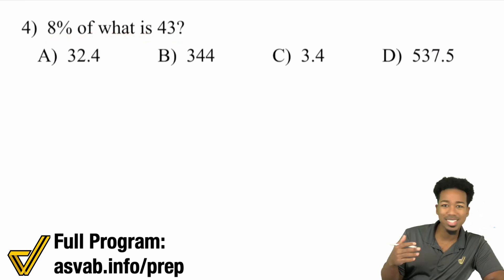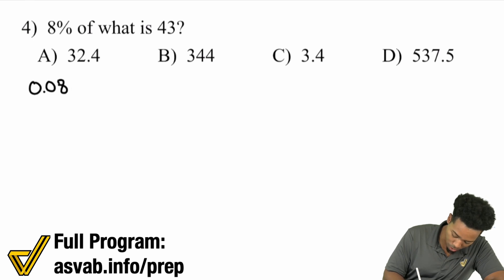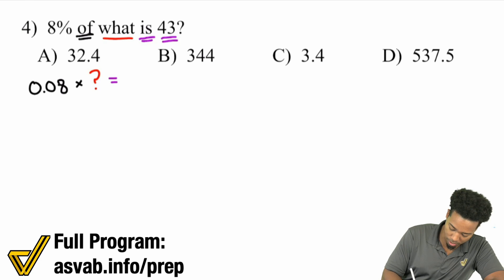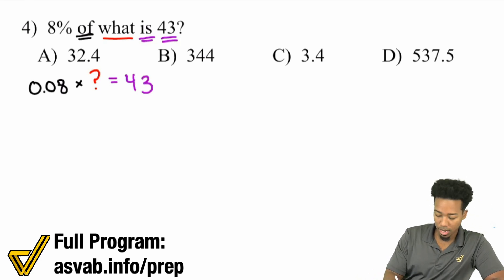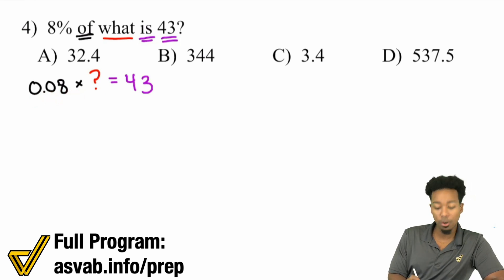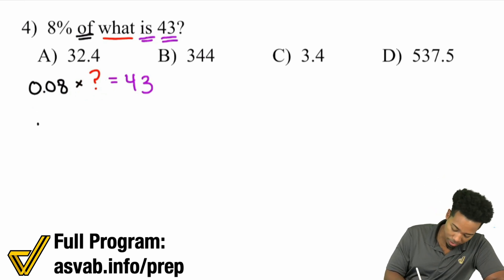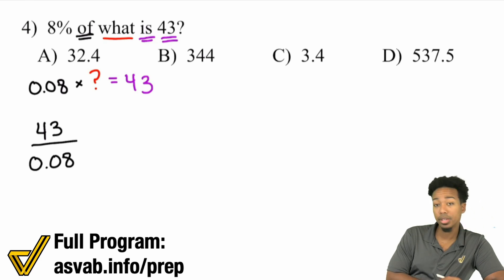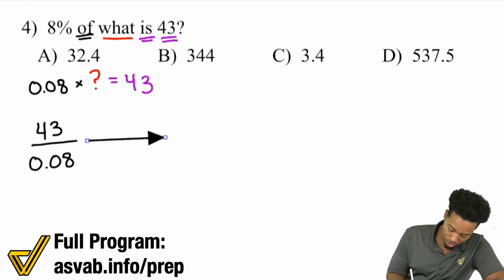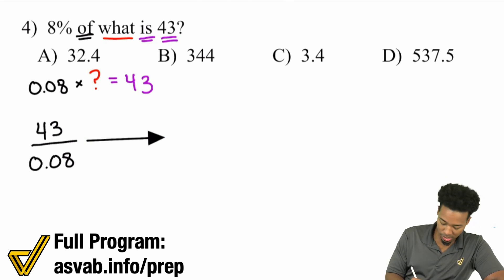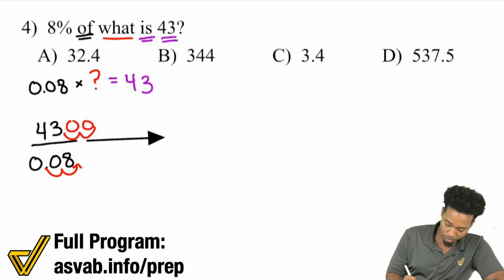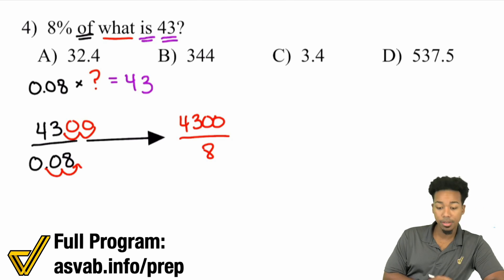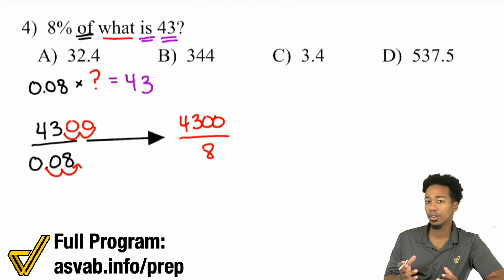8% of what is 43? Write this out from English to math: 8% becomes 0.08, 'of' means times, some number, equals 43. We're not working forward — we got to work backwards to find what that is. Working backwards, we get 43 divided by 0.08. The only problem is we're dividing by a decimal. To get rid of that decimal, move the decimal place two times on both top and bottom. So this becomes 4,300 divided by 8.